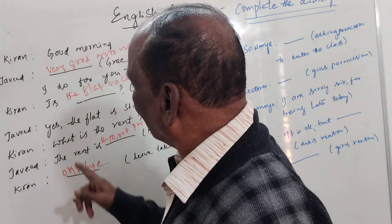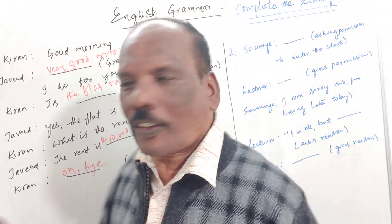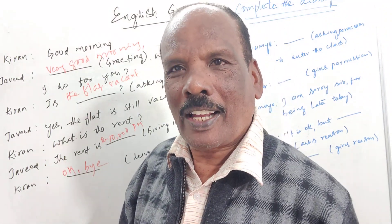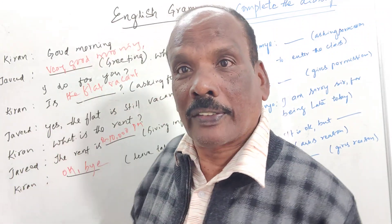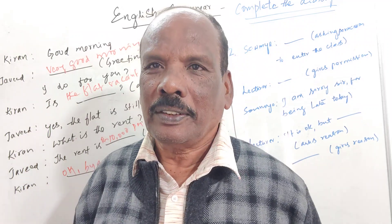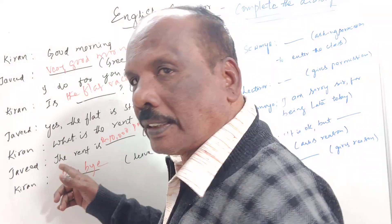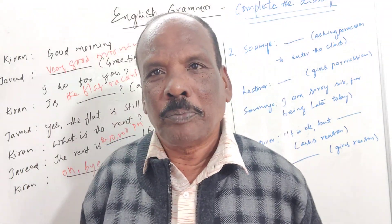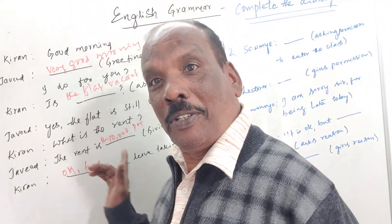Next question: 'What is the rent?' He is asking. You may write 5,000 or 15,000 or 20,000 — but Javed is answering that the rent is 10,000 rupees per month. 10,000 rupees per month.